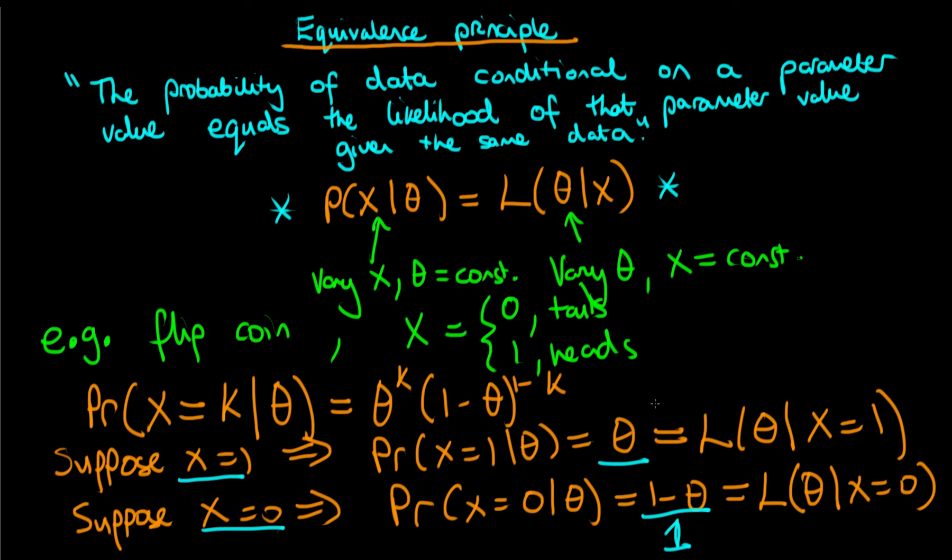Whereas if we were to condition on the data and hold that constant, so this is the likelihood situation. Suppose that we condition on x being equal to one first of all and then we vary theta here. Then I've already shown in a previous video that what we have does not behave as a valid probability distribution because it does not integrate to one.